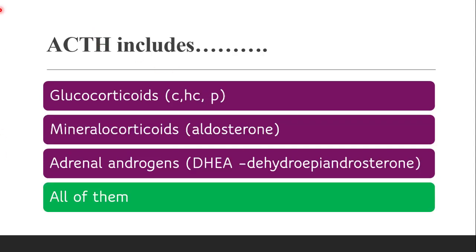Next question: ACTH includes dash. Adrenocorticotropic hormone includes glucocorticoids such as cortisone, hydrocortisone, prednisolone, and betamethasone; mineralocorticoids such as aldosterone; and adrenal androgens like DHEA (dehydroepiandrosterone). The correct answer is all of them — glucocorticoids, mineralocorticoids, as well as adrenal androgens.